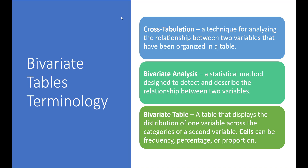First, let's discuss some terminology. Cross-tabulations is a technique for analyzing the relationship between two variables that have been organized into a bivariate table. Bivariate analysis is the method we are using to detect and describe the relationship between these two variables, and the bivariate table displays the distribution of one variable across the categories of a second variable — a form of cross-tabulation. Cells can be frequency, percentage, or proportion.